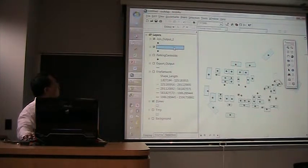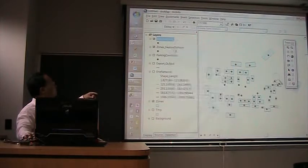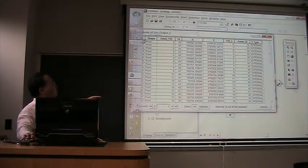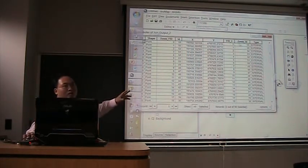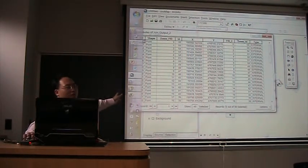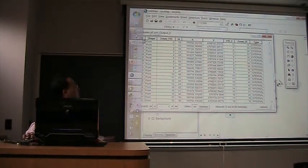After doing this, there will be a new layer called join output. And right click that, we are going to see. All attributes from the other layer have been added to this layer. For example, this type information we need.